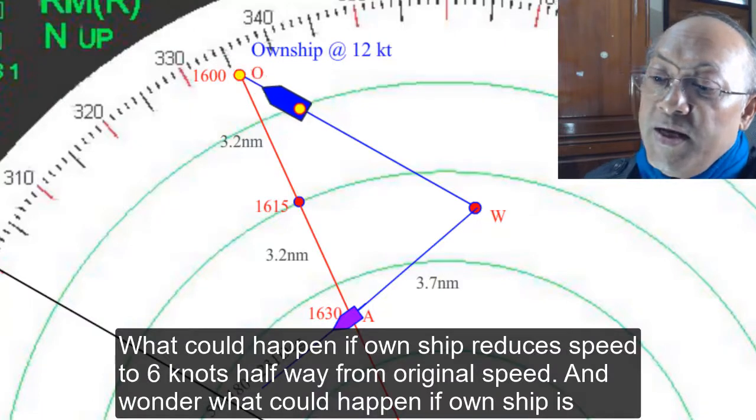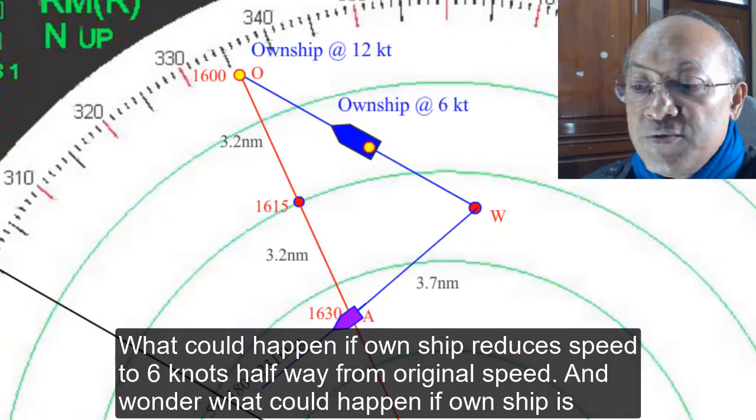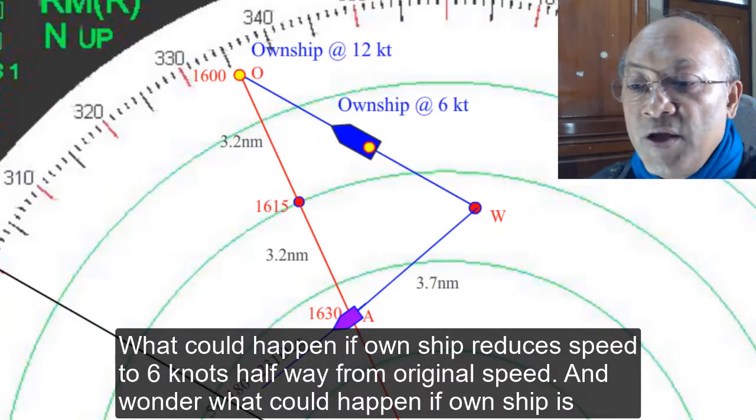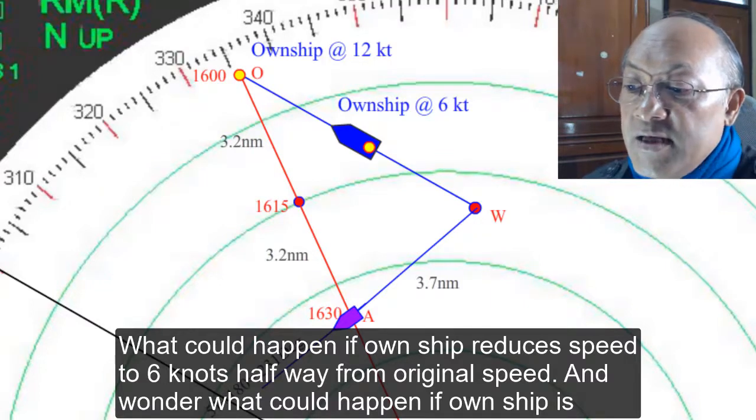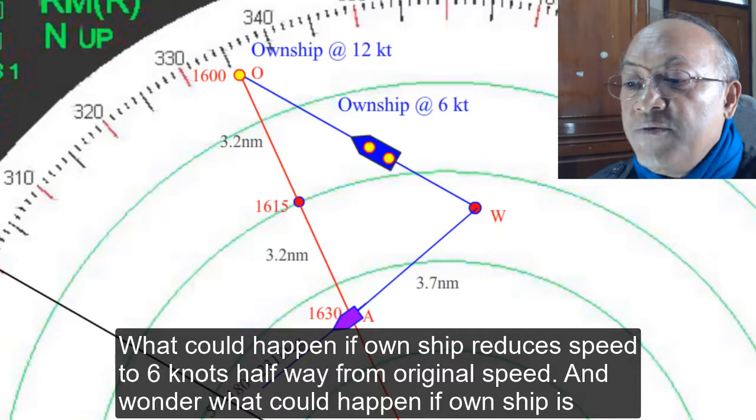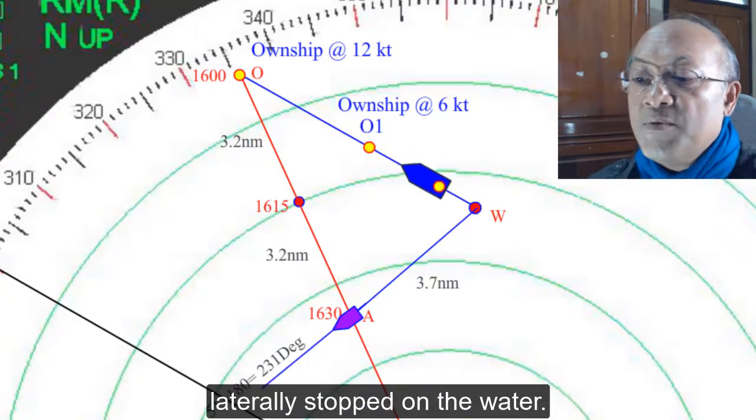What could happen if own ship reduces speed to 6 knots, half way from the original speed? And wonder what could happen if own ship is literally stopped on the water?